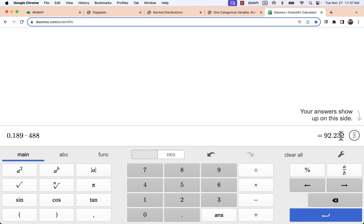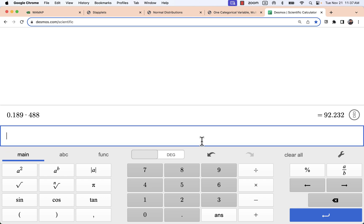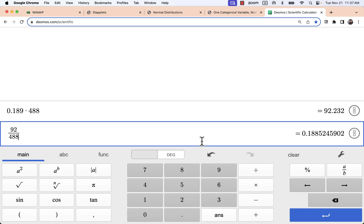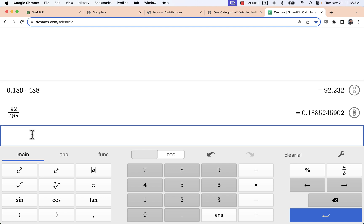And we can double check this. If we take 92 out of the 488 this is that proportion that we're really going to be looking at. We get 0.1885 which rounds up to 0.189 if we have three decimal places. So I'm going to have 92 successes and 488 minus 92 or 396 failures for my first group.